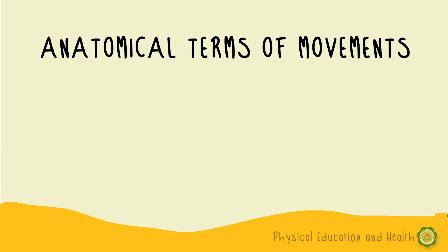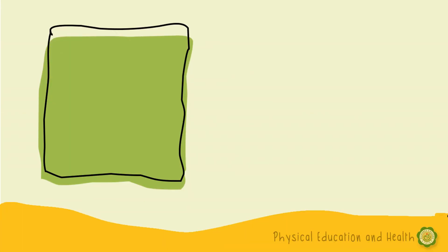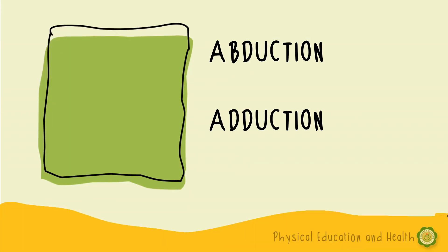We all know that muscles contract to produce movements, and these terminologies will help us describe the actions. We have anatomical terms of movements. Anatomical terms of movement are used in describing the actions of muscles on the skeleton, and we have 14 terms of movements. So let's start with abduction and adduction.